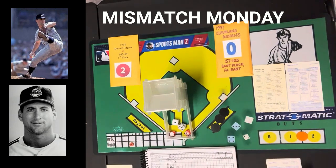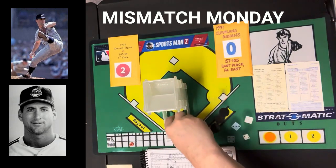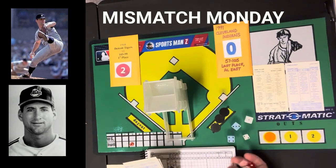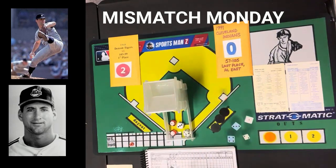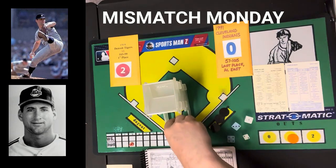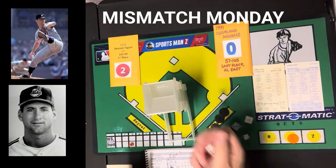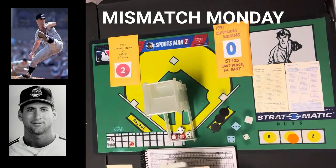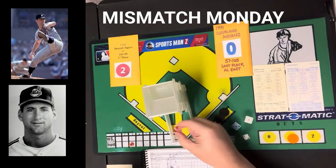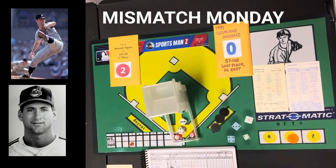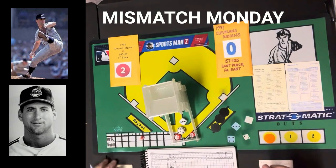Bottom of the third, McLain working. Mark Lewis gets a 3-5 — strikeout, McLain's third consecutive strikeout dating back to last inning. Joel Skinner gets a 2-10 — ground ball to the pitcher, out 1-3. Chris James gets a 3-6 — pop-out to shortstop. No runs, we go to the top of the fourth.